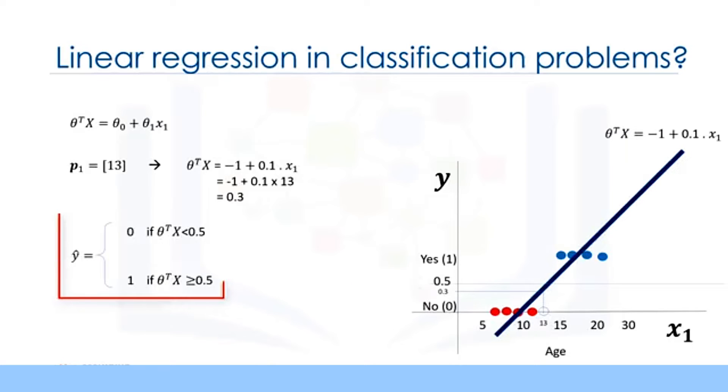So, we write a rule here for our model, y hat, which allows us to separate class 0 from class 1. If the value of theta transpose x is less than 0.5, then the class is 0. Otherwise, if the value of theta transpose x is more than 0.5, then the class is 1. And because our customer's y value is less than the threshold, we can say it belongs to class 0, based on our model.